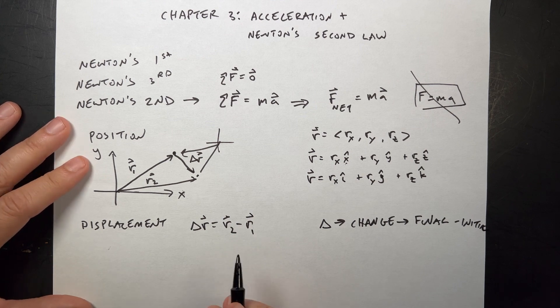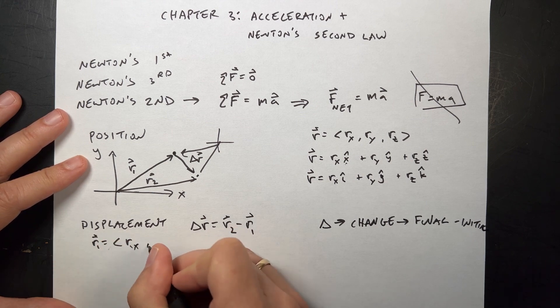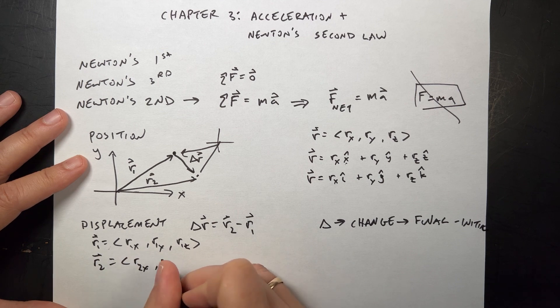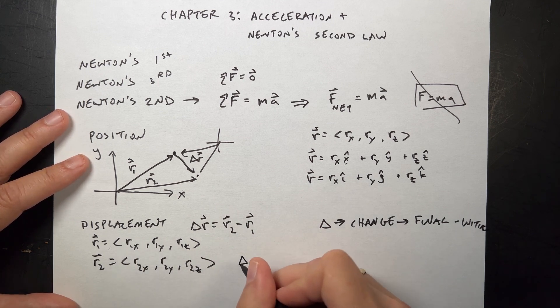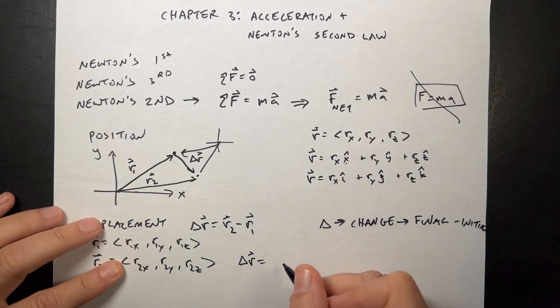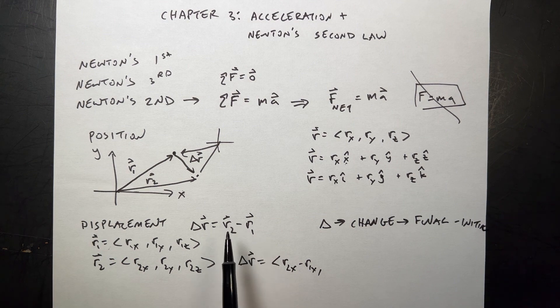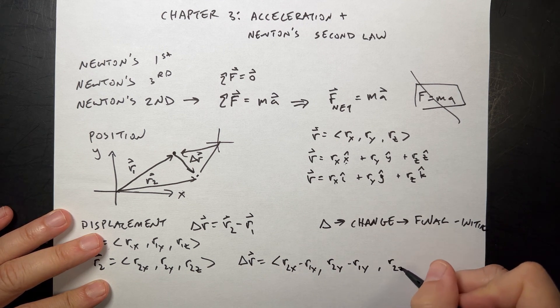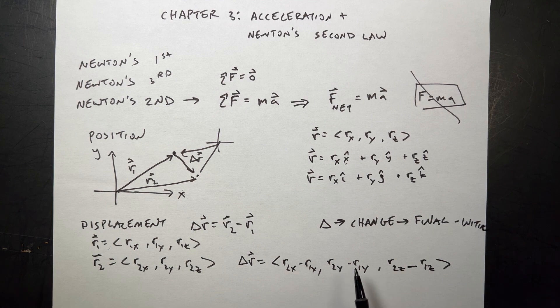Let's write this out just to be clear. If I have R1 and R2, R1 is R1X, R1Y, R1Z, and R2 is R2X, R2Y, R2Z. Those are all scalar values because I've already broken the component form. Then delta R is going to be R2X minus R1X, R2Y minus R1Y, and R2Z minus R1Z. Because if I add vectors or subtract them, I add or subtract their components.